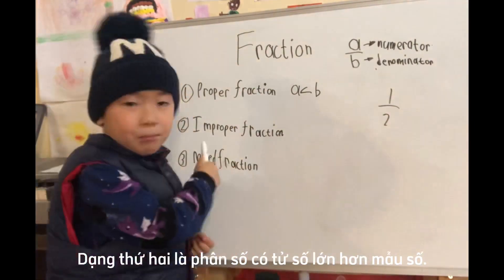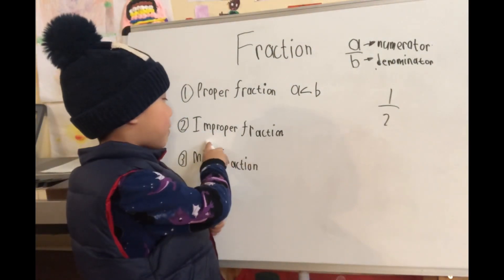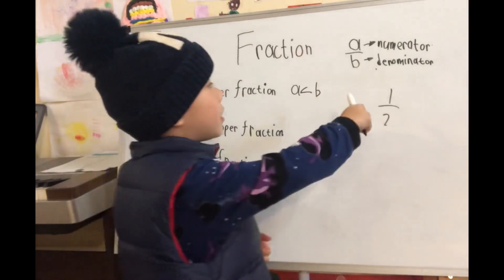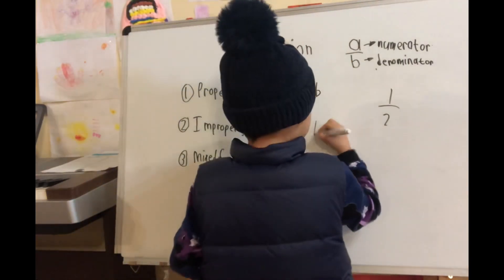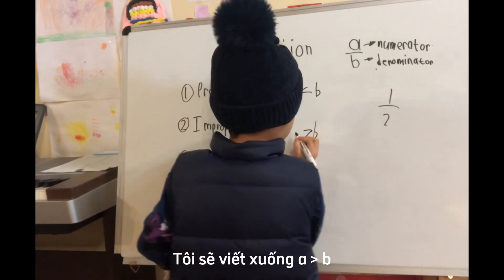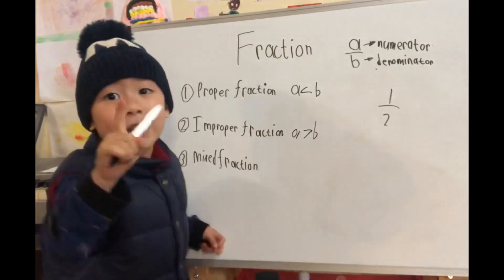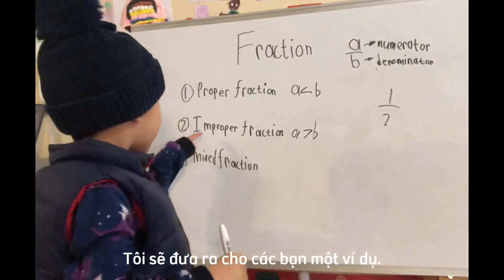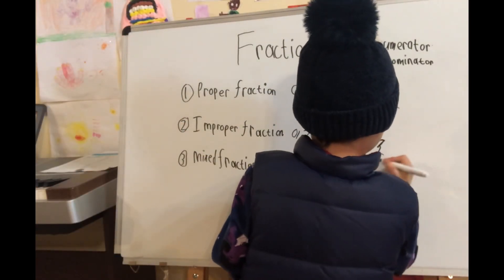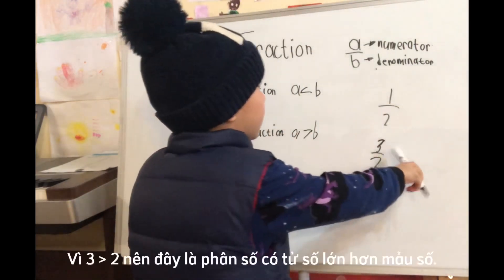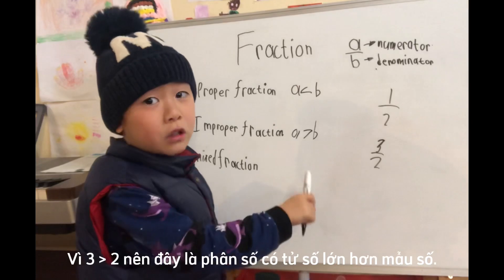The second type of fraction is improper fraction. Improper fraction, because the numerator is bigger than the denominator. That's why it's improper fraction.